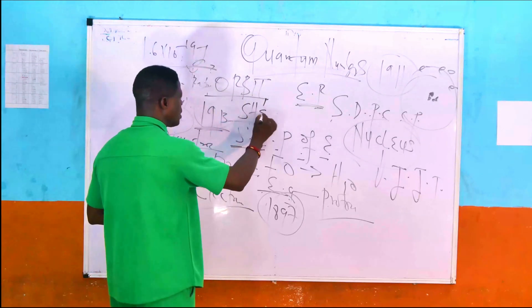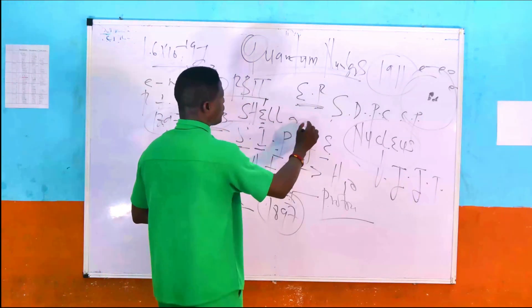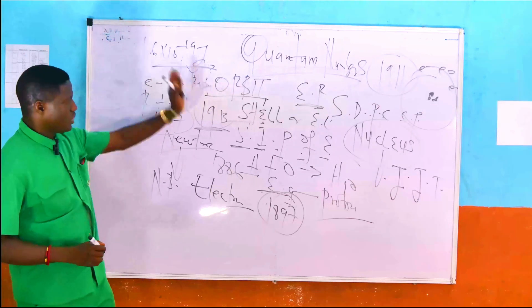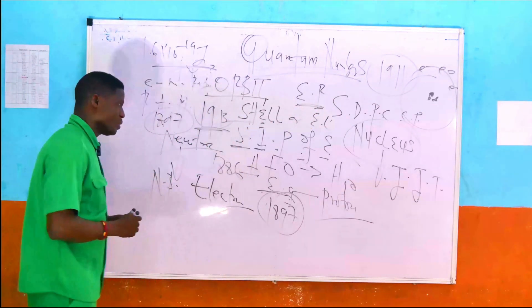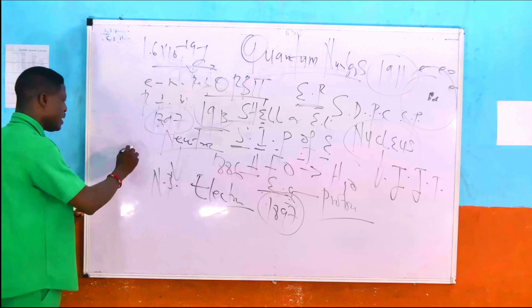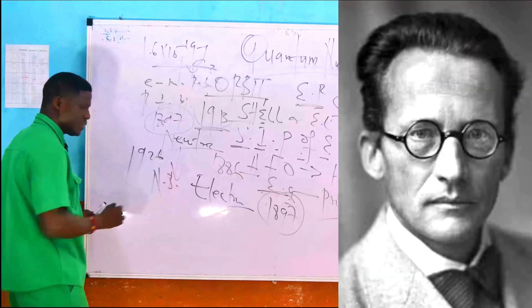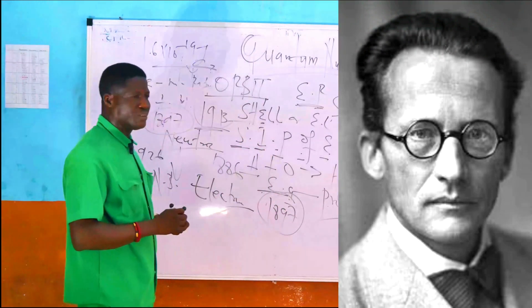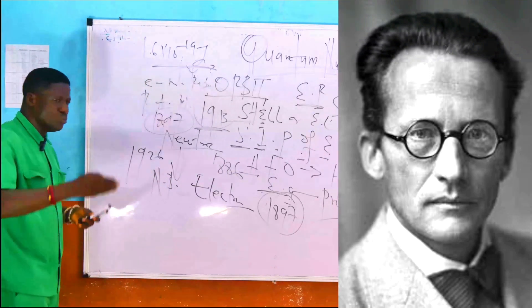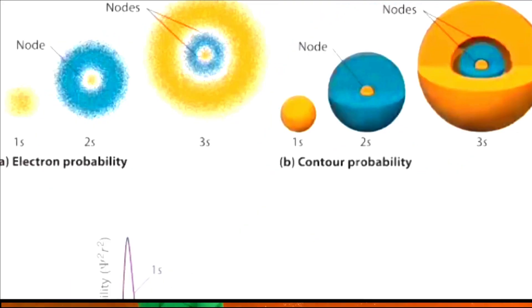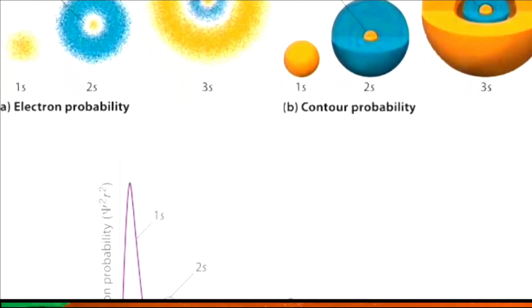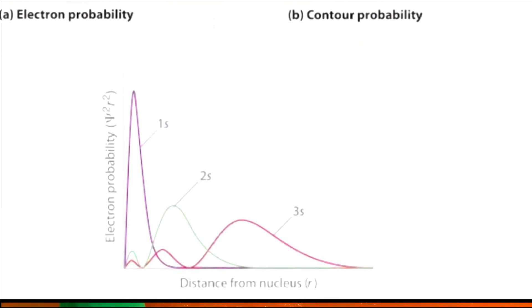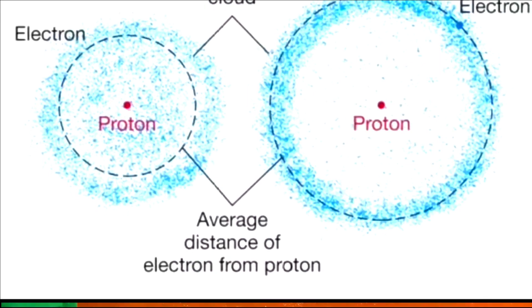You can refer to it as the orbit, the shell, or the energy level. But in the year 1926, the Austrian physicist known as Erwin Schrödinger discarded the concept of an electron moving in a definite fixed pattern around the nucleus of the atom. Rather, he insisted that an electron does not move around the nucleus in a definite, regular pattern.